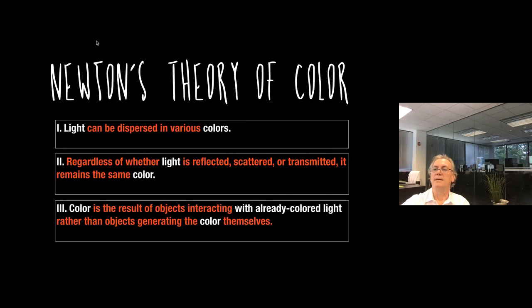These are Newton's theories: light can be dispersed in various colors, light is the result of objects interacting with already colored light rather than objects generating color themselves. And regardless of whether light is reflected, scattered or transmitted, it remains the same color.